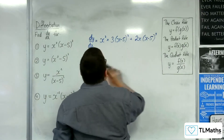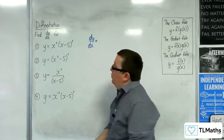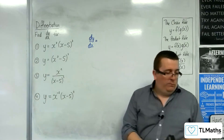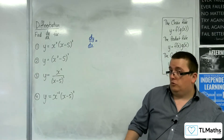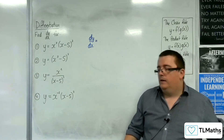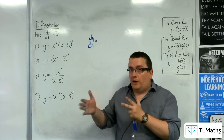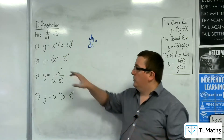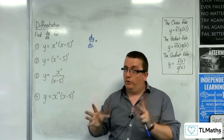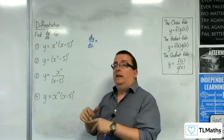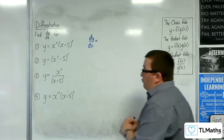Right, second one. We've got y equals x cubed minus 5, all cubed. Now, there is no product of functions there — no two functions being multiplied together, no quotient of functions. So this is just the chain rule.